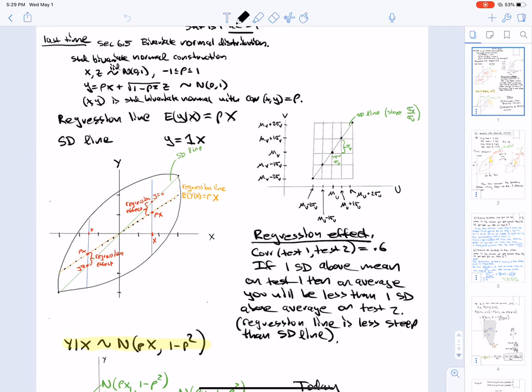The regression effect is when you have the regression effect, it's useful to use the SD line as a comparison. In this picture on the left, you can see the regression effect when your X is greater than 0. The expected value of Y is Rho X, which is less than X, which is on the SD line. So you underperform, you regress towards the mean.